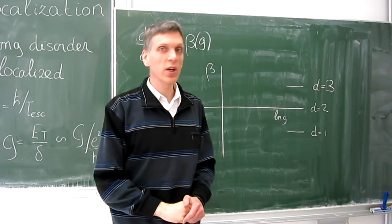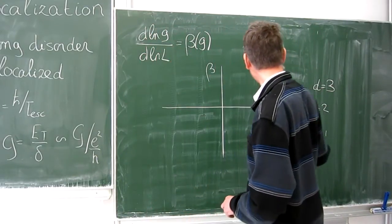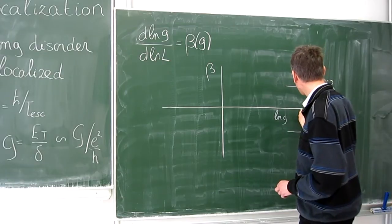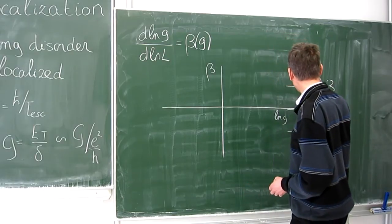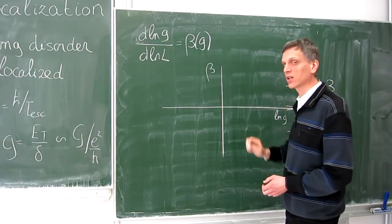If you look at the quantum corrections for d is 2, you actually find that the beta function is slightly negative for the orthogonal unitary class and that it is positive for the symplectic class.